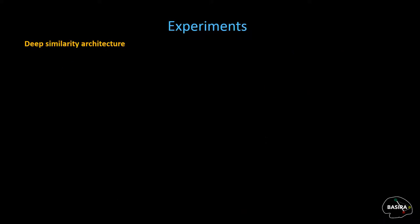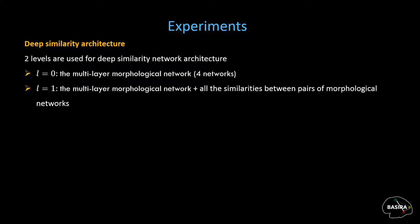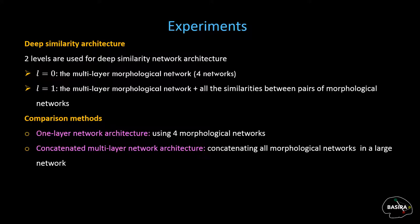For the deep similarity network architecture, we used two levels: Level 0, the multilayer morphological network using four networks; and Level 1, the multilayer morphological network plus all the similarities between pairs of morphological networks. We compared our proposed architectures with two conventional methods: first, a one-layer network architecture using four morphological networks, and second, a concatenated multilayer network architecture by concatenating all morphological networks into a large network.